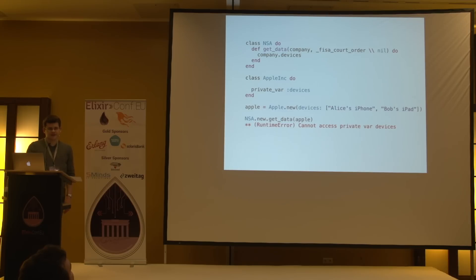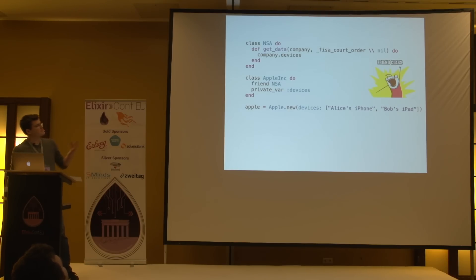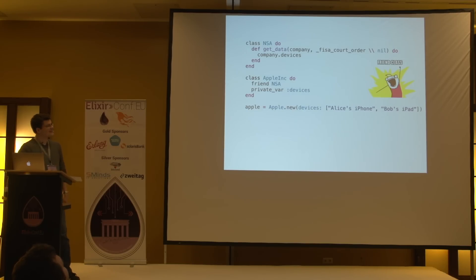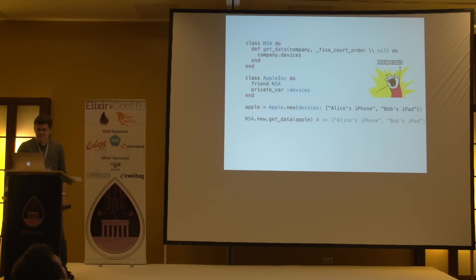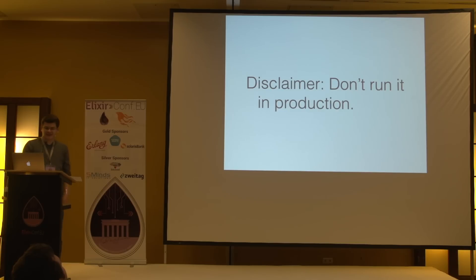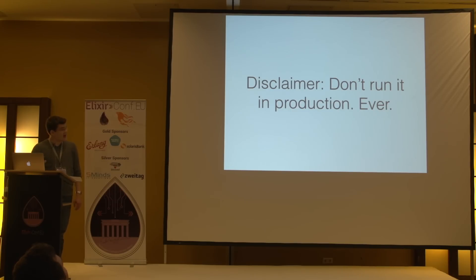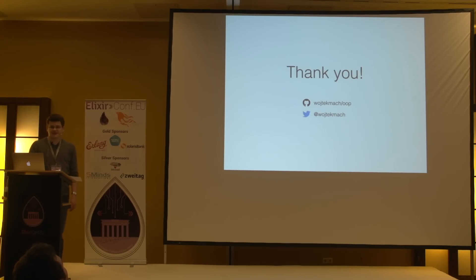Any C++ programmers here, by the way? The final feature today is you can use friend classes. So if you are led to believe that the NSA is your friend, it will be able to access your data. Disclaimer: don't run it in production. I'm really serious, don't run it in production. And if you want to talk about it, grab me later. Thanks.